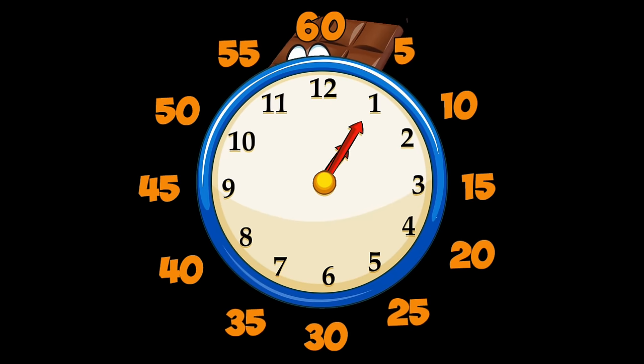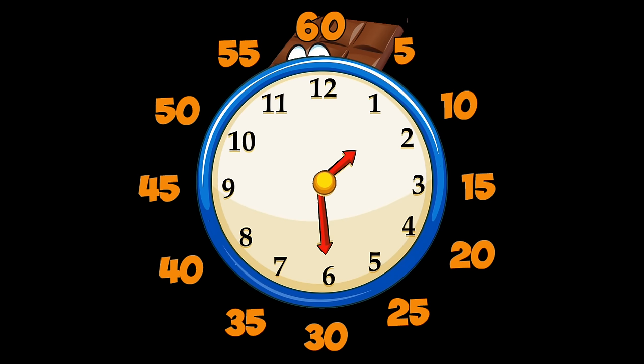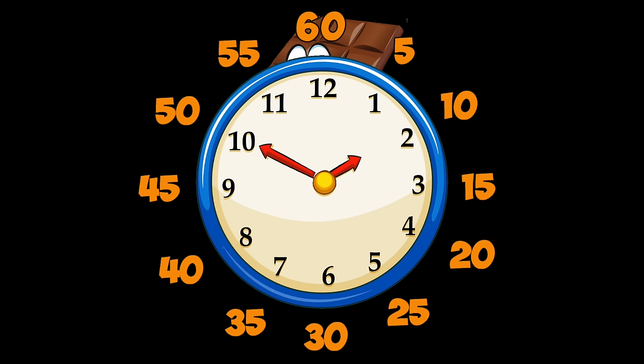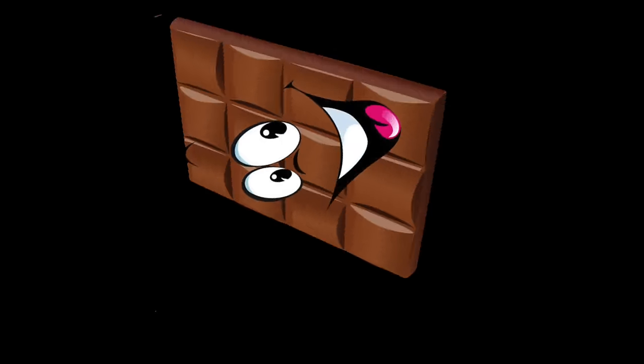It was 5, 10, 15, 20, 25, 30 — that's a half hour and we're still really hungry. 35, 40, 45, 50, 55, 60 — where's our chocolate? Well, 60 minutes is one hour, so I guess it's chocolate time!